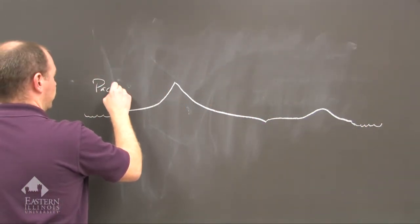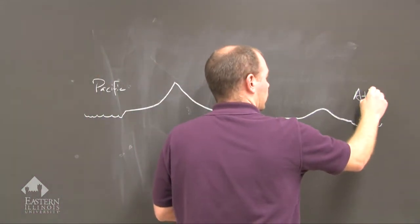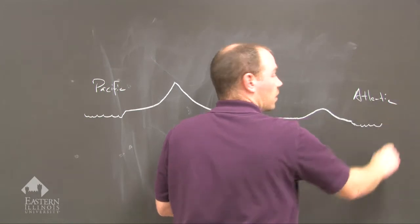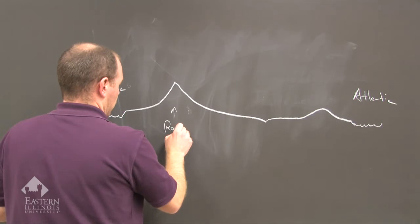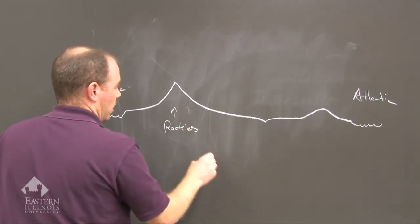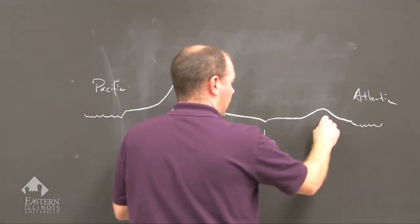So let me go ahead and label these - the Pacific and the Atlantic. And in between we have the Rockies, these are the Rockies, and then the Mississippi, and then the Appalachian Mountains.